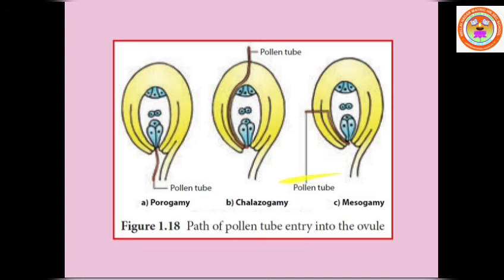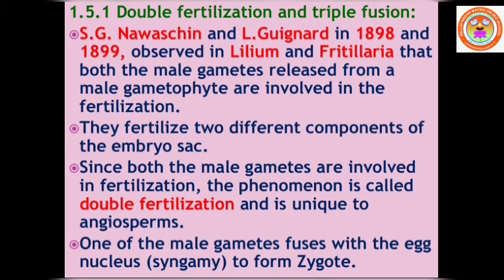Now we are going to continue with double fertilization, which is an important event. Fertilization is the process of fusion of male and female gametes. In double fertilization, fertilization takes place two times. One haploid male gamete fuses with one haploid female gamete to give a diploid zygote. Remember: the zygote is a diploid cell.